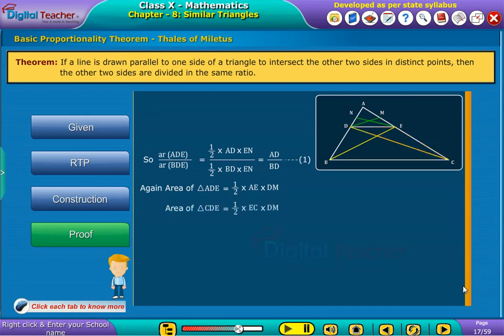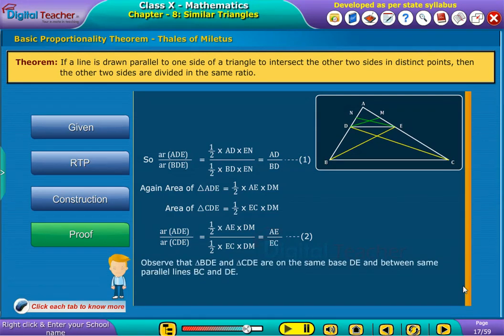area of triangle CDE is equal to half into EC into DM. Now, again dividing area of triangle ADE with area of triangle CDE, we get equation 2.